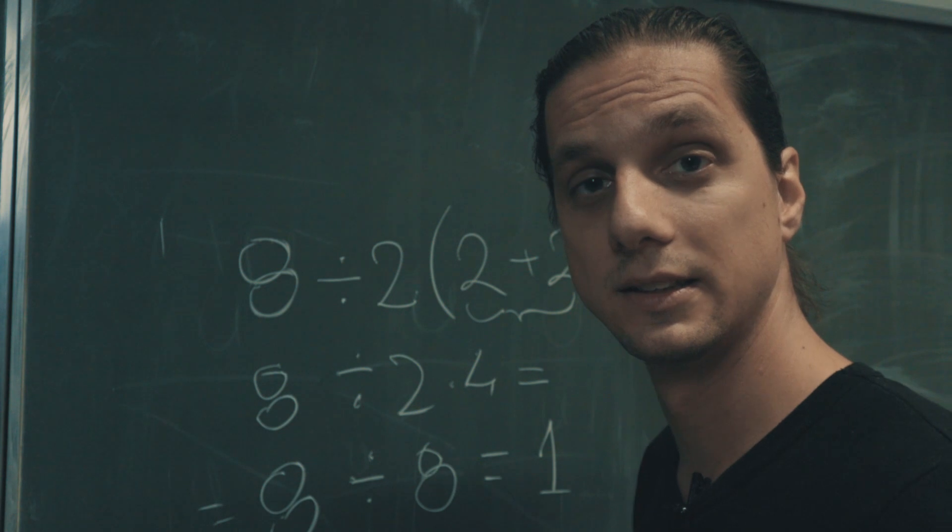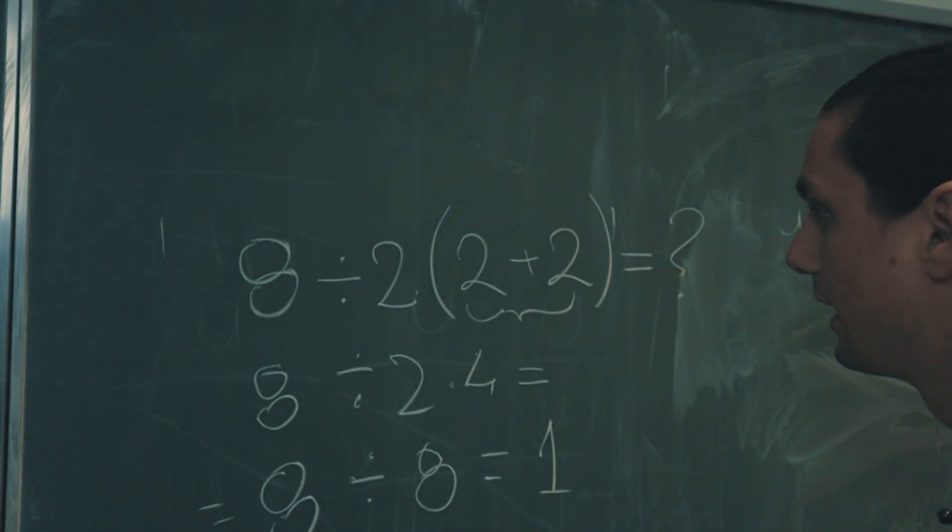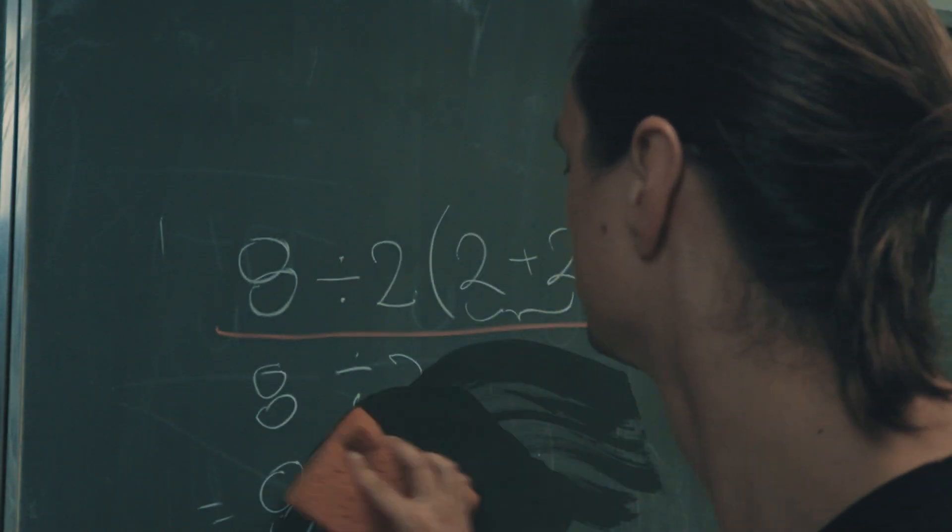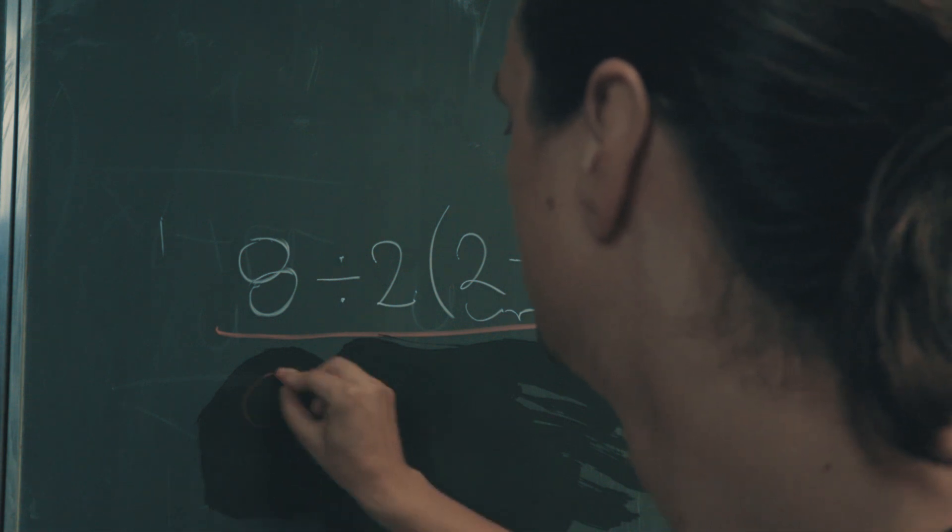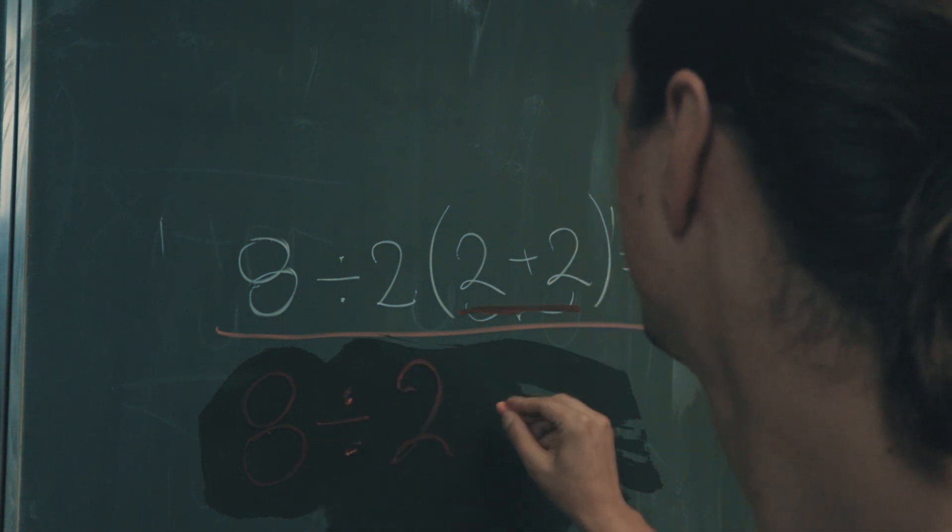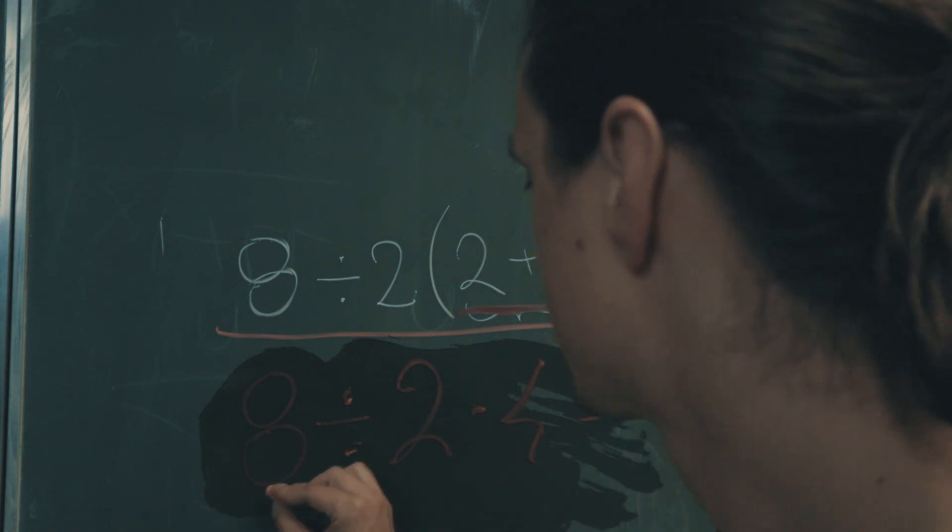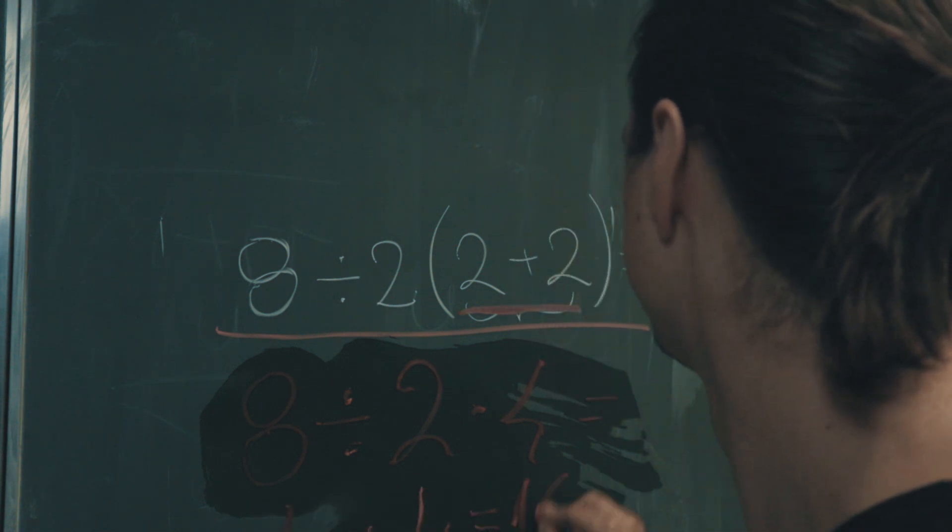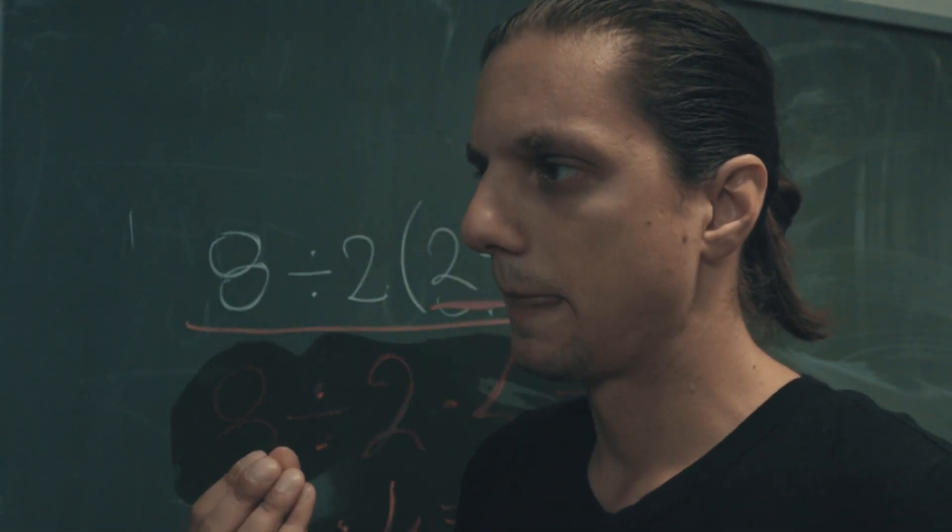But if you got 16, that's correct as well. Why? Because you can say, okay, let me try again, starting from here. So we have 8 and of course we want to solve what's in the bracket, divided by 2 multiplied by 4. And now if you go from left to right, we're going to say 8 divided by 2 equals 4, and 4 multiplied by 4 equals 16. So basically both groups are right. So what's the problem?